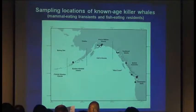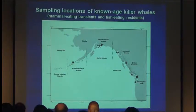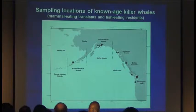Here are the sampling locations for the eastern North Pacific killer whales. Samples were collected from both marine mammal-eating transient killer whales as well as the resident fish-eating killer whales from various areas — the furthest south being the southern residents, with samples all the way to the eastern Aleutian Islands.